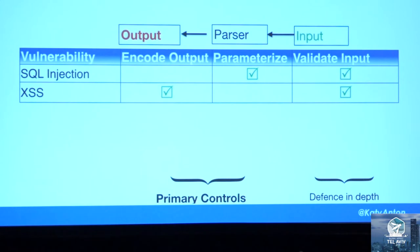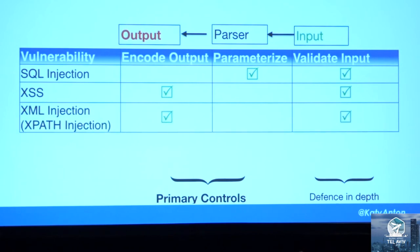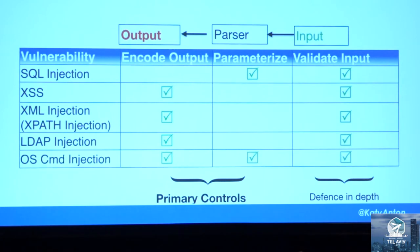In the case of cross-site scripting, the primary control is to contextually encode the data before creating the HTML document that is sent to the HTML parser. As defense in depth, we still have to validate the input. Similarly for XML injection, LDAP injection, and command injection — in the case of command injection, depending on the language used, ideally we would parameterize the data if available; if not, contextually encode the output before sending it to the parser to neutralize characters that can trigger the injection.